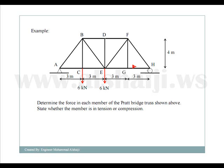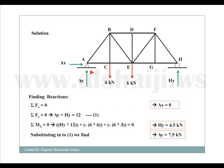We start by finding the reactions at supports A and H. At A we have a hinge, so reactions are AX and AY. At H we have a roller, with reaction HY acting upward. Taking the summation of forces in the X direction and setting it to zero, we find AX equals zero, since there are no external forces acting in the X direction.